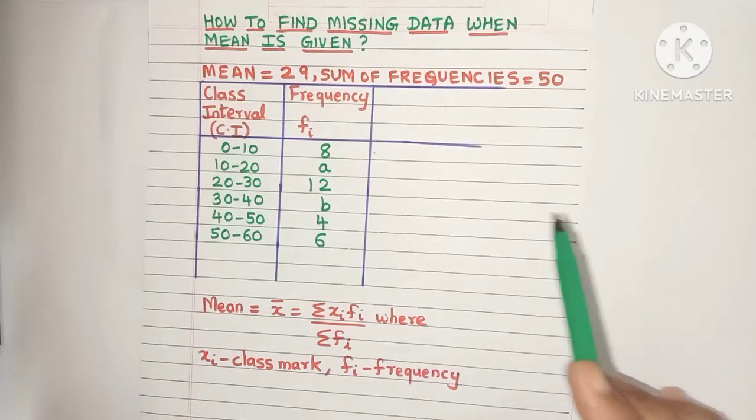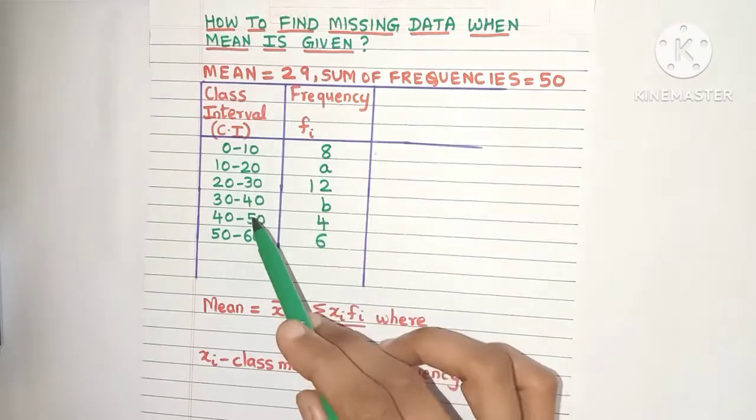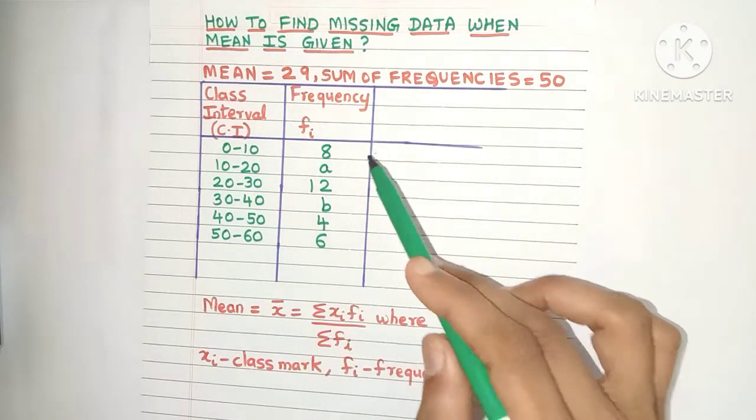Hello everyone. Today let's learn how to find missing data when the mean is given. In this example, here is the class interval column, and here is the frequency column.